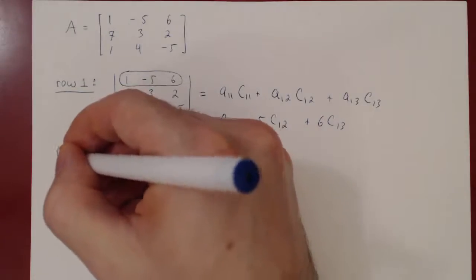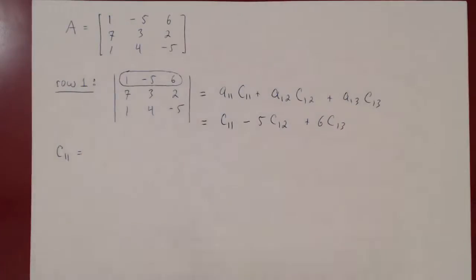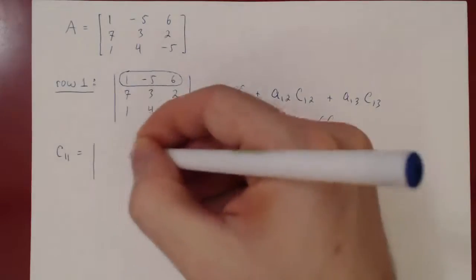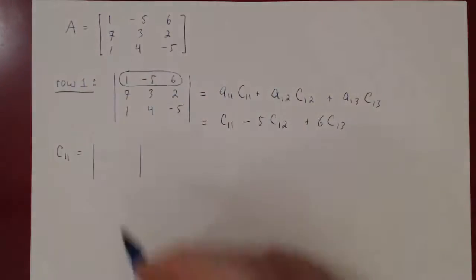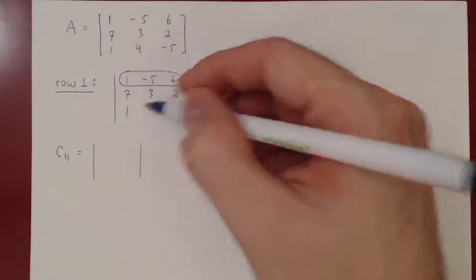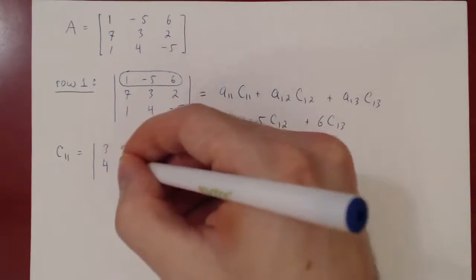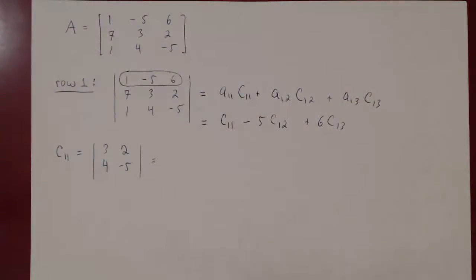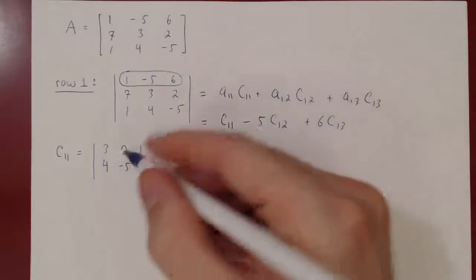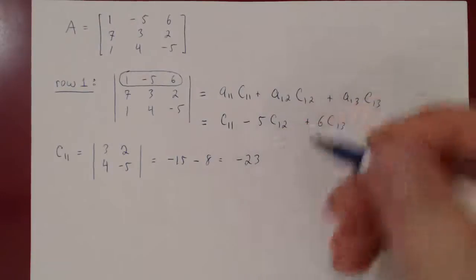C11: negative 1 to the power 1 plus 1 is positive 1, so C11 equals the minor M11. Deleting row 1 and column 1 leaves the matrix (3, 2; 4, -5). The determinant is 3 times -5 minus 4 times 2, which is -15 minus 8, giving negative 23. That is C11.